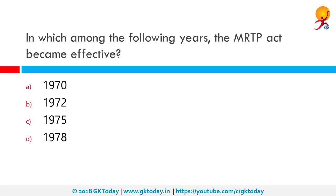In which among the following years did the MRTP Act become effective? On the basis of recommendation of the Dutt Committee, the MRTP Act was enacted in 1969 to ensure that the concentration of economic power in hands of a few rich was prohibited along with monopolistic and restrictive trade practices. The Monopolies and Restrictive Trade Practices Act was passed by Parliament on 18 December 1969 and got President's assent on December 27, 1969, but it only came into force on June 1, 1970.